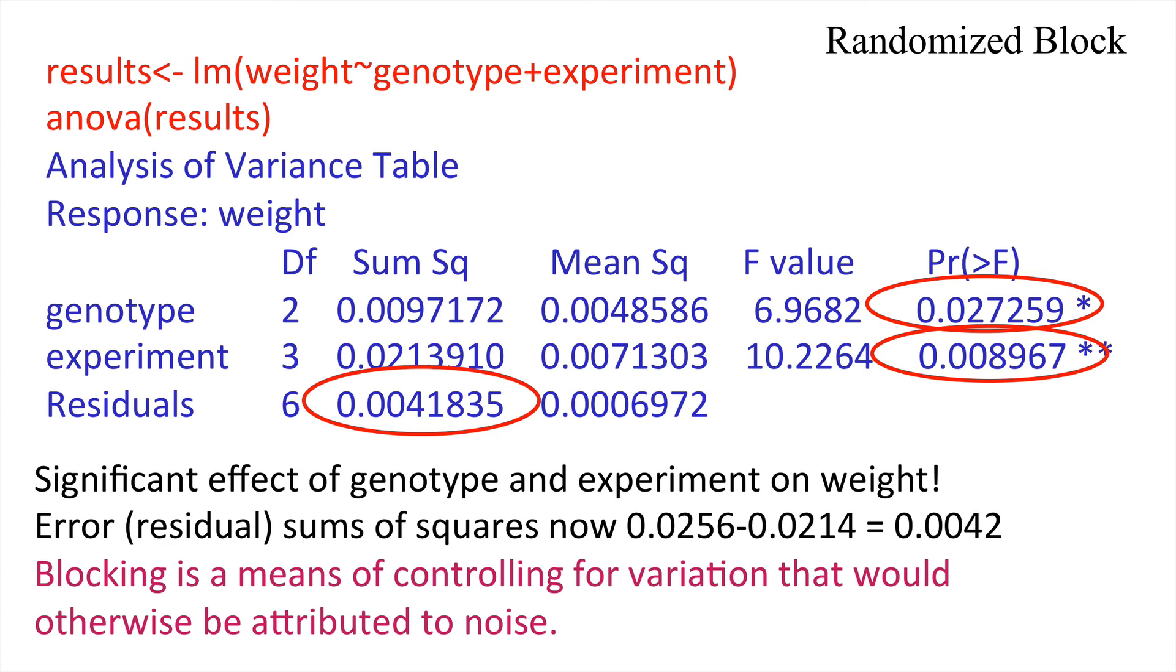So our blocking has done two things. First of all, it has allowed us to establish whether there was effect of experiment and in this case there clearly was. But secondly, it has allowed a much more powerful test in that we have removed some of the variability in our data. We have accounted for it and therefore allowed us to have a much more powerful test of the effect of genotype on our weight.